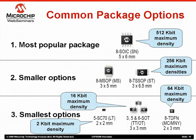Our smallest packages include the 2x2 mm SC70, our smallest option available in 1 and 2 kbit devices. The 3x3 mm SOT23 package, in 3, 5, and 6 lead versions, can hold up to 16 kbits. The 2x3 mm TDFN package is also very small and less than 0.8 mm thick, making it an excellent choice for height-limited applications and can hold up to 64 kbits. Just about all our products are available in die and wafer form.